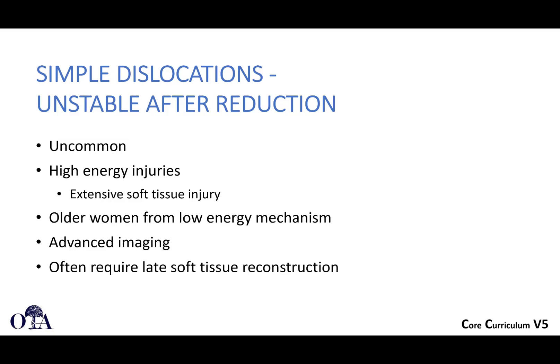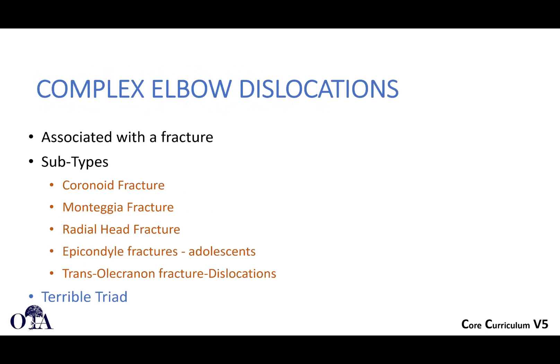Simple dislocations are uncommonly unstable after reduction, but when this occurs it is likely from higher-energy injury with extensive soft tissue damage compromising dynamic and static stabilizers. These are also seen more frequently in older women from low-energy mechanisms and may require late soft tissue reconstruction. The next video will cover complex elbow dislocations.